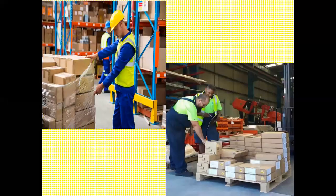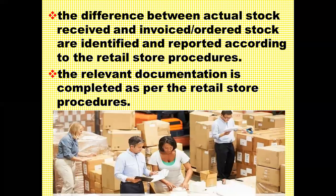The stock is checked as per the required documentation — we start unloading and checking if whatever we have received matches what we ordered. The difference between the actual stock received and the invoice order stock is identified and reported according to retail store procedures. If we ordered something and did not receive it, or received more than ordered, we identify that, and the relevant documentation is completed.